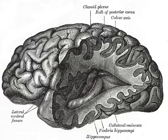Parkinson's disease is a degenerative disorder of the central nervous system. It results from the death of dopamine-generating cells in the substantia nigra, a region of the midbrain. The cause of cell death is unknown.